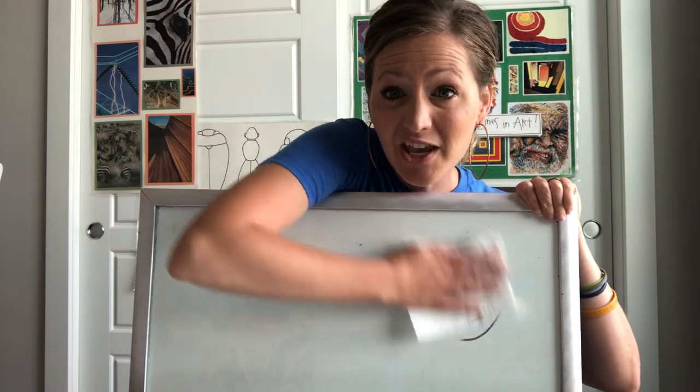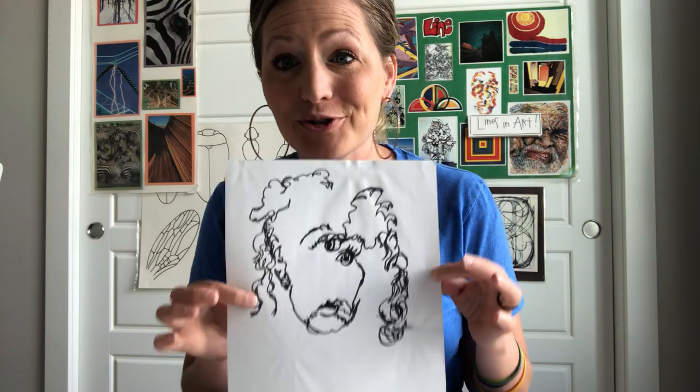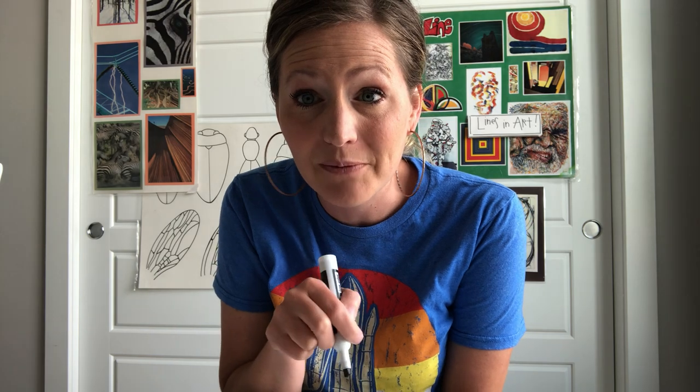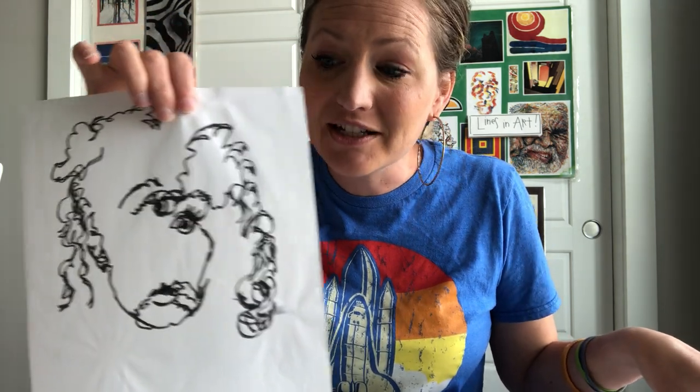Now I'm going to show you one of my favorite projects — it's funny and weird and I like what it looks like every time. This is called a blind contour drawing. You take a dot for a walk without lifting your pencil off the paper — but it's called 'blind' because you don't get to look at your paper either. You can only look at what you're drawing.